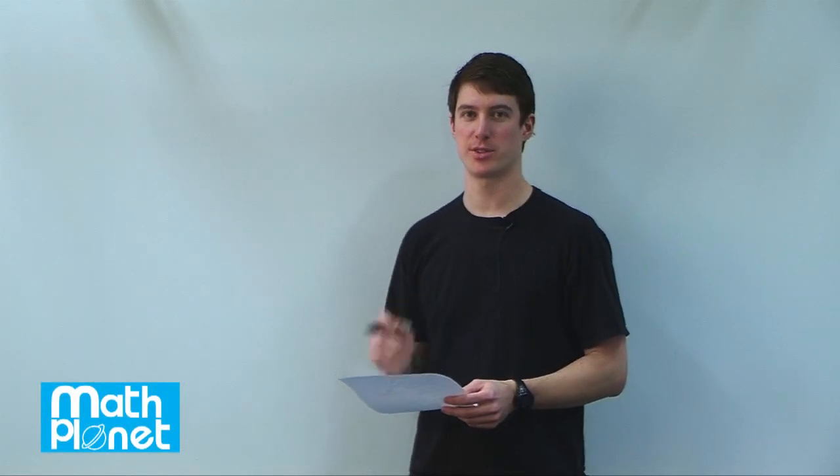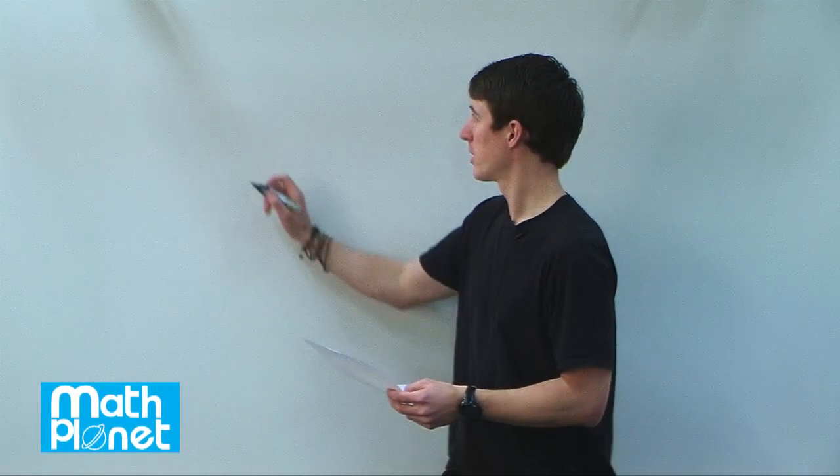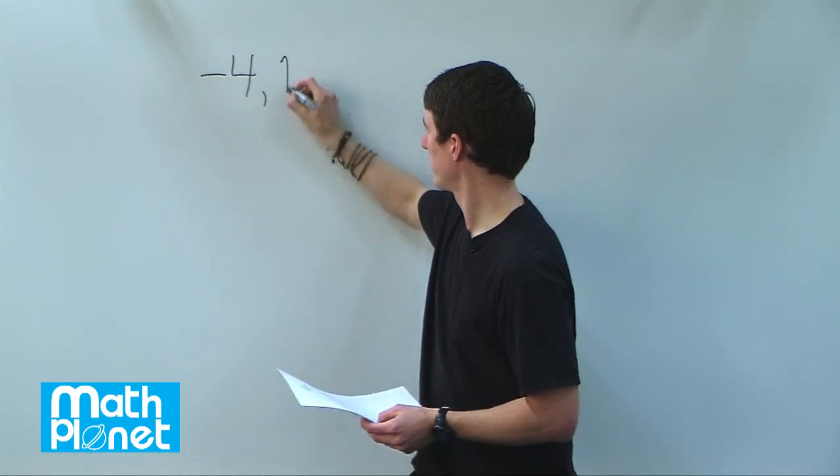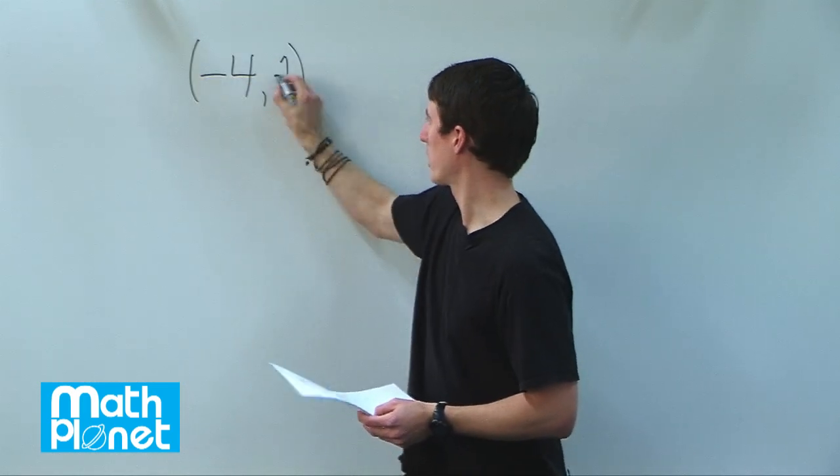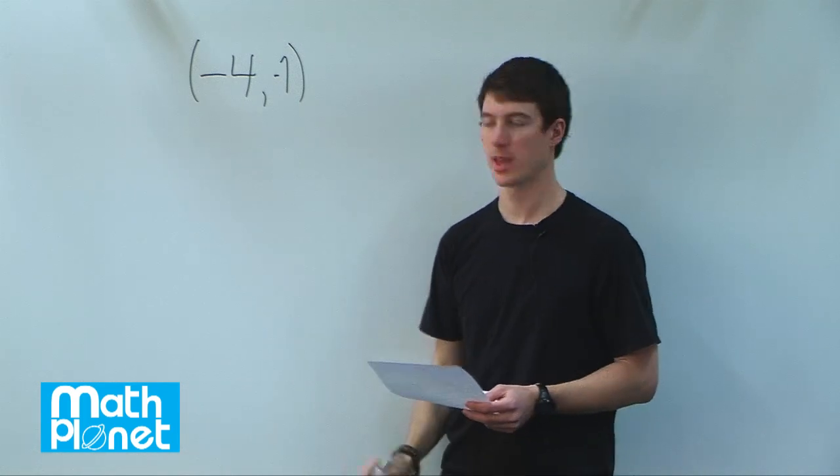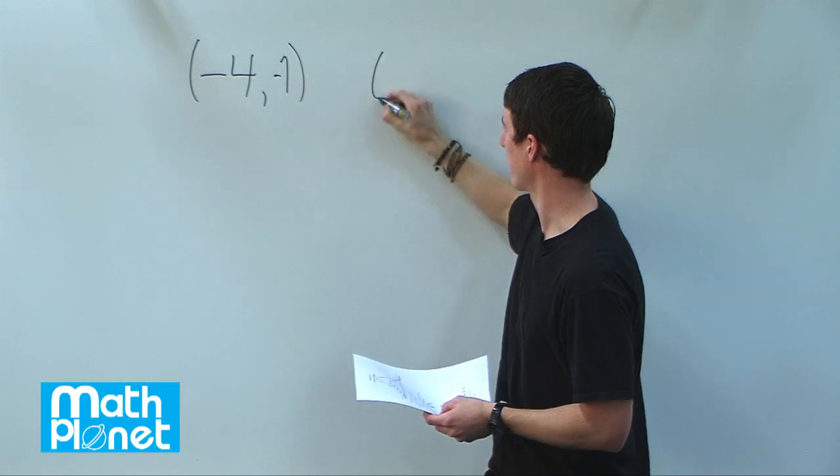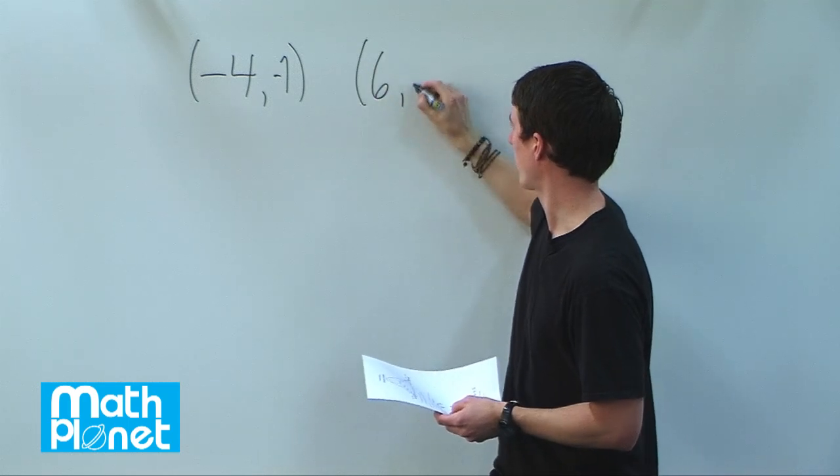Here we want to find the midpoint between two ordered pairs of points. So we have negative 4, 1, so x is negative 4 and y is negative 1. And then we have the point 6 and 7, so x is 6 and y is 7.